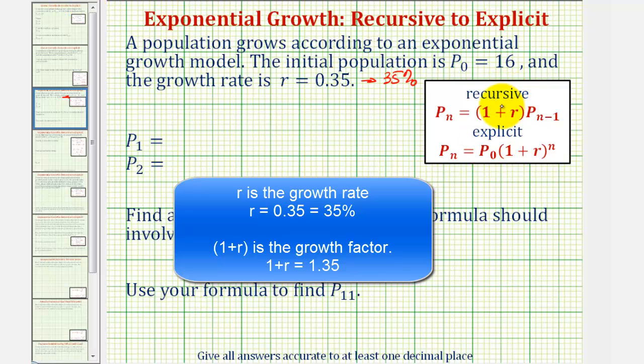For the recursive formula, we have p sub n equals the quantity one plus r, that would be one plus 0.35, so 1.35 times p sub n minus one.